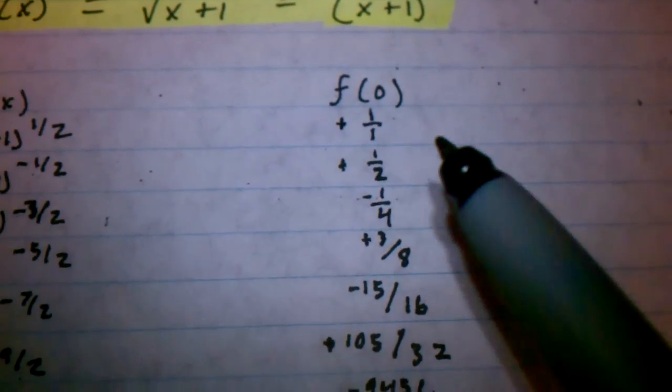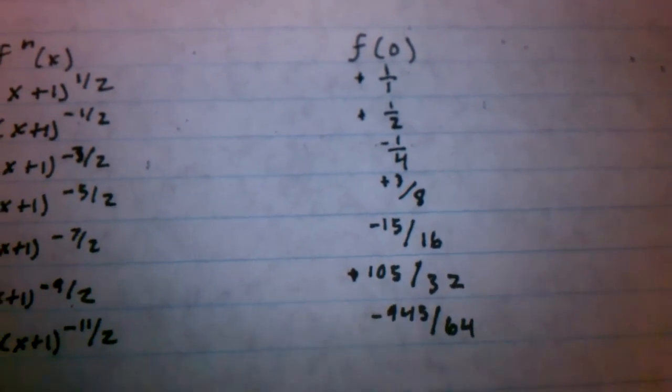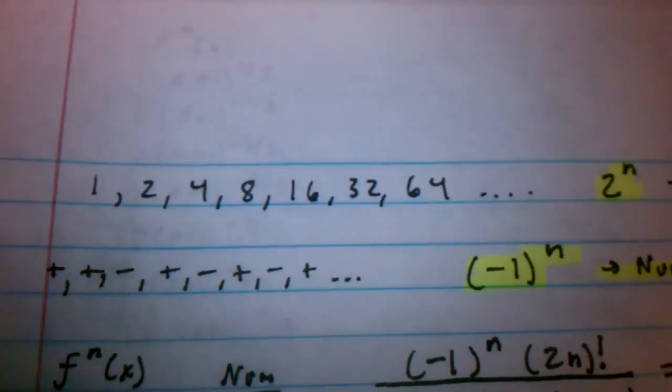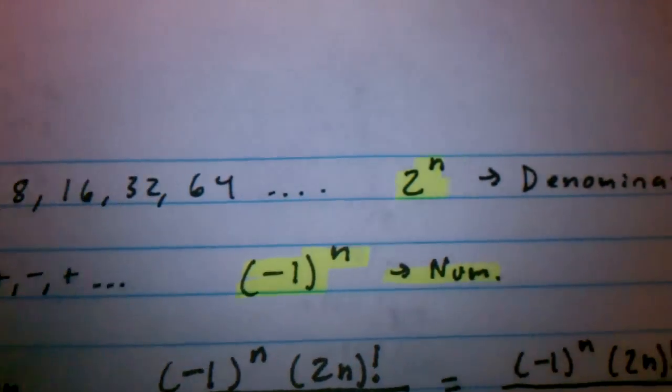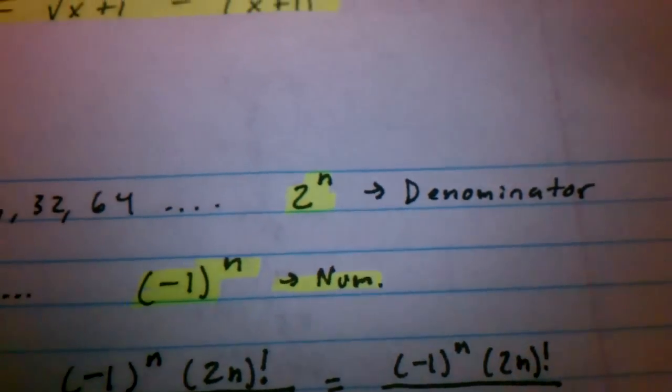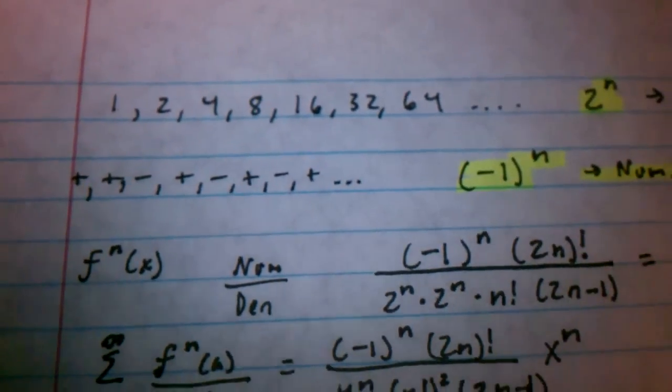Now, if we look back at the denominator, what do we have? 1, 2, 4, 8, 16, 32, 64. Very simple concept. It's a simple 2 to the n to the denominator. So, our denominator is very simple.